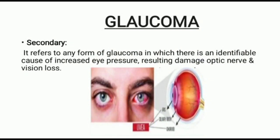The next subtype of acquired glaucoma is secondary glaucoma. It refers to any form of glaucoma in which there is an identifiable cause of increased high pressure resulting in damage to the optic nerve and vision loss.